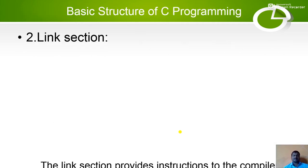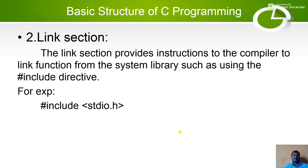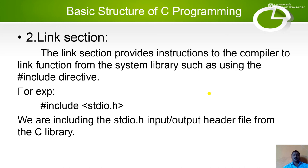The second section is the link section. The link section provides instructions to the compiler to link functions from the system library, such as using the hash include directive. For example: hash include stdio.h. This links the stdio.h input/output header file from the C library to the compiler.